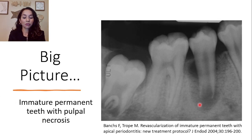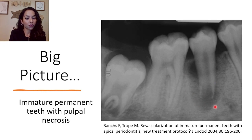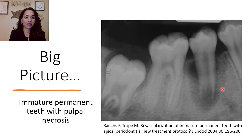This image was taken from the 2004 paper initially published by Bonks and Trope — a pilot study. Focusing on tooth number 29, we can appreciate the radiolucency and the open apex. We're going to see how we can manage cases like this.